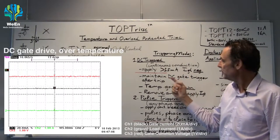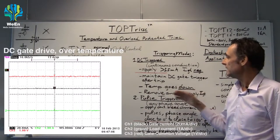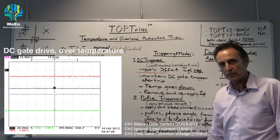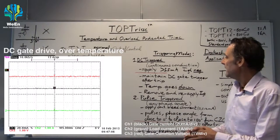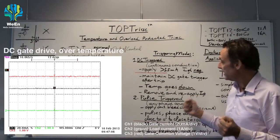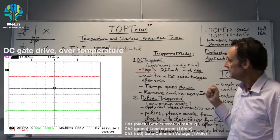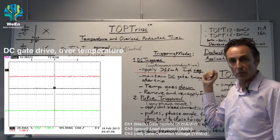After switching off you have to maintain this DC gate trigger current and then the temperature will go down of course because the TOP TRIAC is switched off. And you can make everything operational again by simply removing and reapplying the gate current, and everything works normally again.